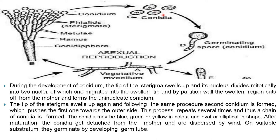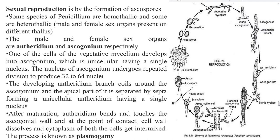After maturation, the conidia detach from the mother and are dispersed by the wind. On a suitable substratum they germinate by developing a germ tube. Sexual reproduction is by the formation of ascospores.